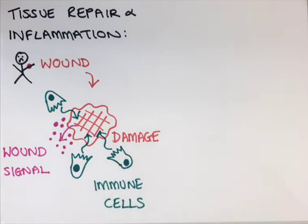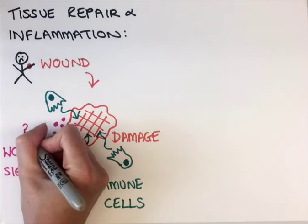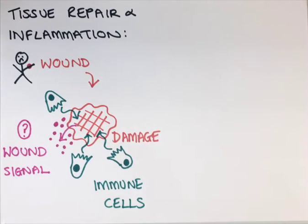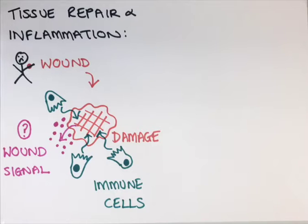Genetic approaches in models such as the fly and fish have given us important clues to what these signals might be. For example, we know that ATP and hydrogen peroxide are important for immune cell recruitment to wounds, but it's currently unclear whether these signals are the real chemo attractants.